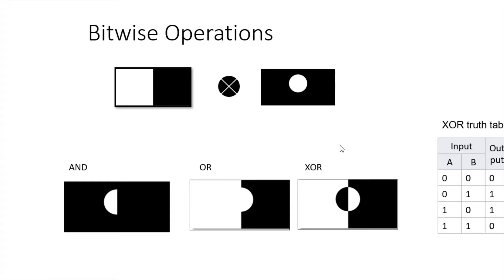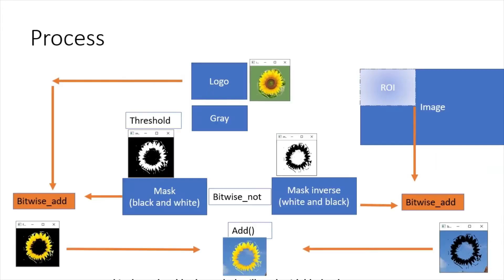For XOR: zero and zero becomes zero, so black and black becomes black. Zero and one becomes one. One and zero becomes one. White and white becomes zero, which is black. One and zero becomes one. You can follow that particular truth table. These are the bitwise operations we are going to use for our calculation in this video.